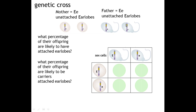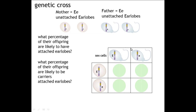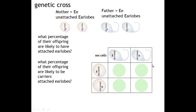The same is true with the mother, and you will notice these have been represented on this diagram. These are the sperm, obviously with the tail, and these are the eggs. This section here is known as a Punnett square, and what it is showing is the different possibilities of the genotype of the offspring. You have the two possibilities of the sperm — either the unattached earlobe or the attached — and the eggs can have the unattached earlobe allele or the attached.